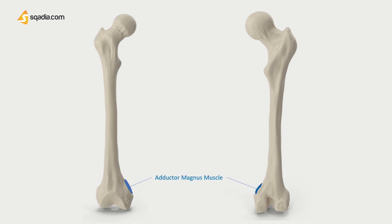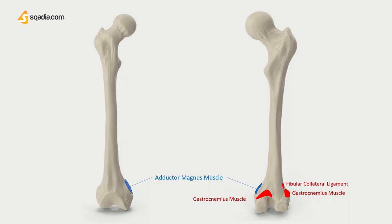On the distal region, there are two epicondyles: the lateral epicondyle and the medial epicondyle. On the lateral side, the fibular collateral ligament of the knee attaches on the supracondylar line. On the medial side, there are two attachment heads for the gastrocnemius muscle, the main calf muscle, which runs down to the Achilles tendon helping in flexion of the knee and foot. The popliteus muscle originates from the lateral condyle of the femur and is the deepest muscle acting solely on the knee.